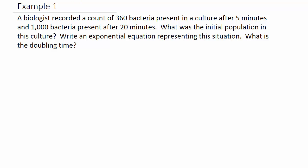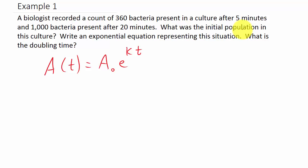Our equation is going to be a(t) = a₀ · e^(kt). We want to find the initial population a₀, and you'll notice the problem doesn't give it to us. A lot of times a problem will give you the initial population, but this one doesn't. So we have to find it based on information we know. We need to figure out both a₀ and k.